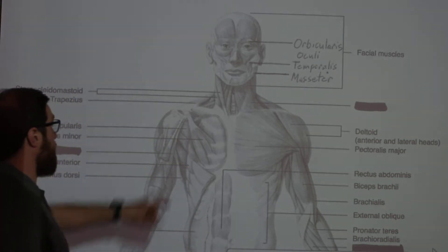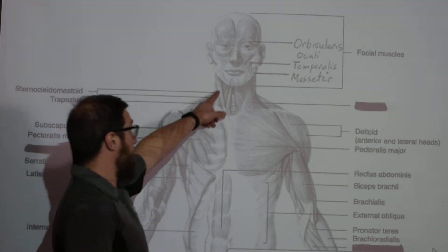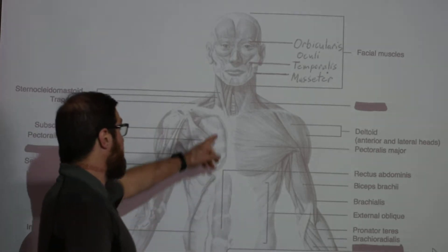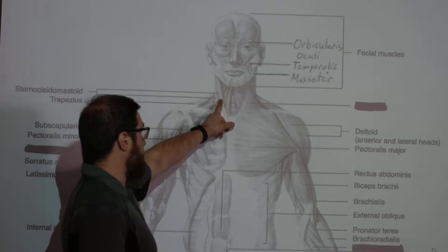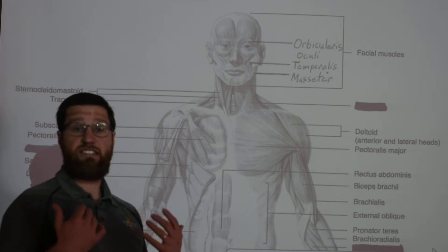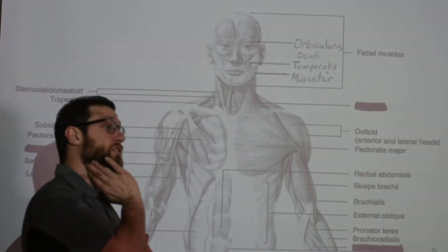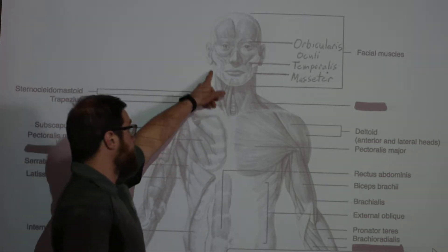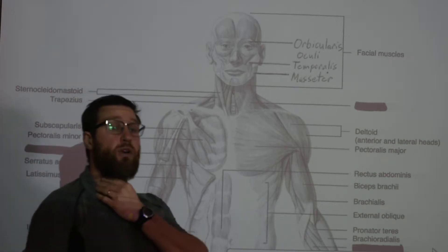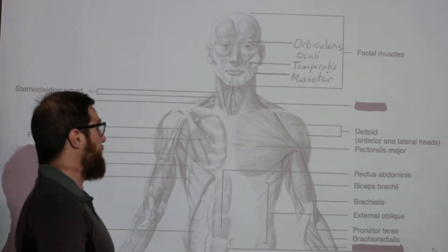Moving a little more inferior, we have your sternocleidomastoid — one of the great muscle names. It is your major neck flexor, involved in many neck movements. Just like it sounds, it connects your sternum, your clavicle, and the mastoid process of your skull, hence the name. When you flex your neck, that's your sternocleidomastoid.